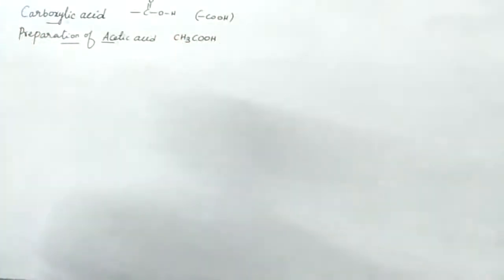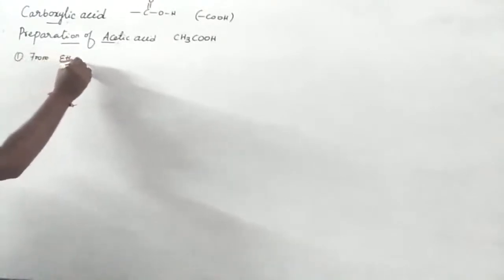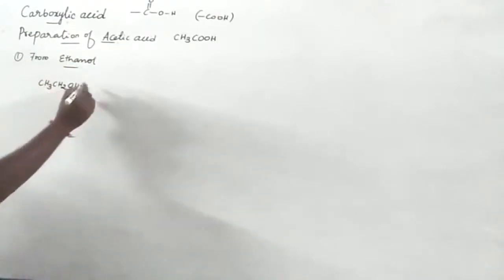Are you missing ethanol? Yes. How to prepare from ethanol? First preparation from ethanol, from alcohol. So from ethanol, ethanol formula - 2 carbon, 1 OH. Ethanol.